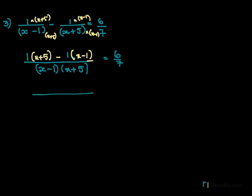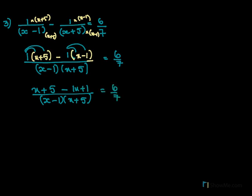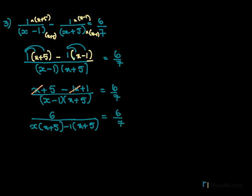Expanding: x plus 5 minus x plus 1 equals 6 by 7. The plus x and minus x cancel out, leaving 5 plus 1 equals 6. On the right side we still need to multiply the denominator brackets: x(x plus 5) minus 1(x plus 5) equals 6 by 7. Now we can take 6 common out from both sides.